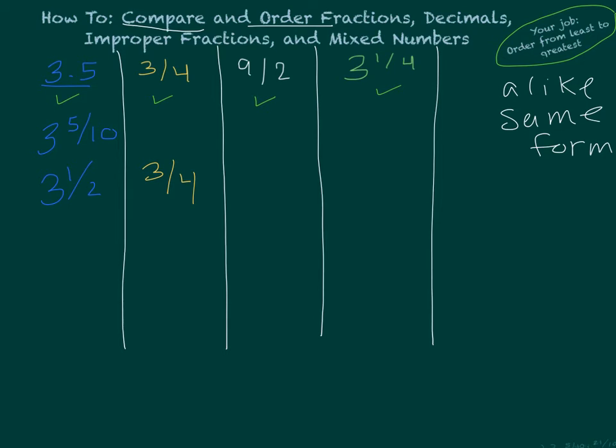9 halves are improper fraction. We could totally leave that in an improper fraction, but I also know that I have a mixed number down here, and I have a mixed number here. I like to keep things looking alike or in the same form when I can, so I'm just going to change my improper fraction to a mixed number, do a little bit of division. 2 goes into 9 a total of 4 times. So, my answer would be, or my mixed number would be 4 and 1 half.